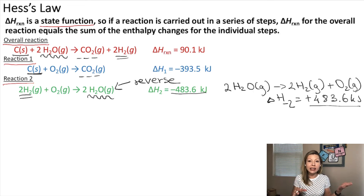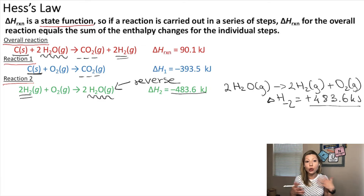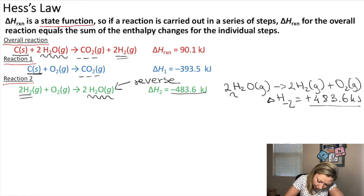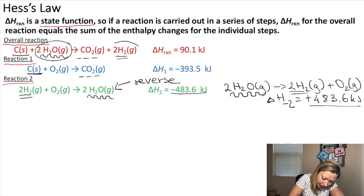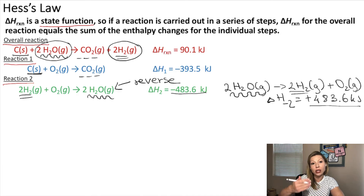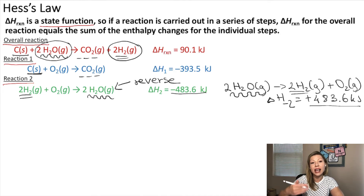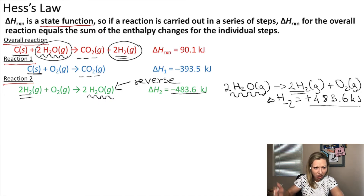Now, are my reactants and products in the right place in reaction one and the reversed reaction two compared to the overall reaction? They are, right? My water is on the reactant side just like in the overall reaction, and my hydrogen gas is on the product side just like in the overall reaction. So I can add them together.